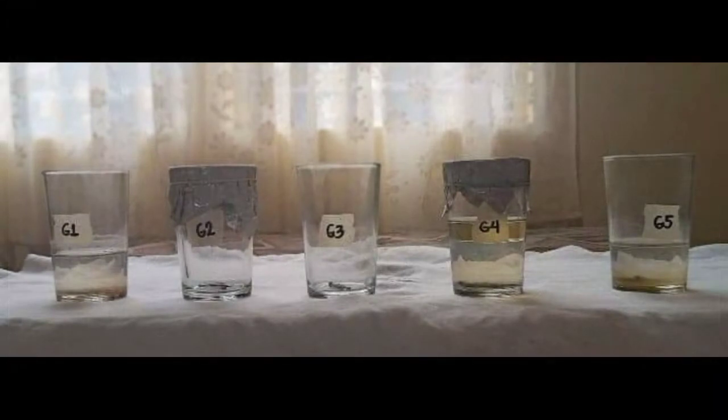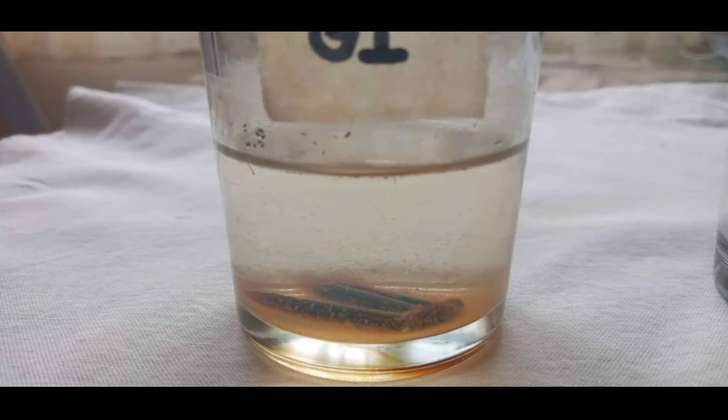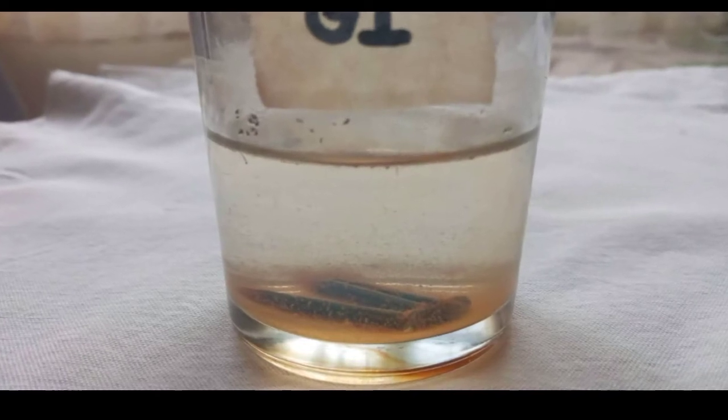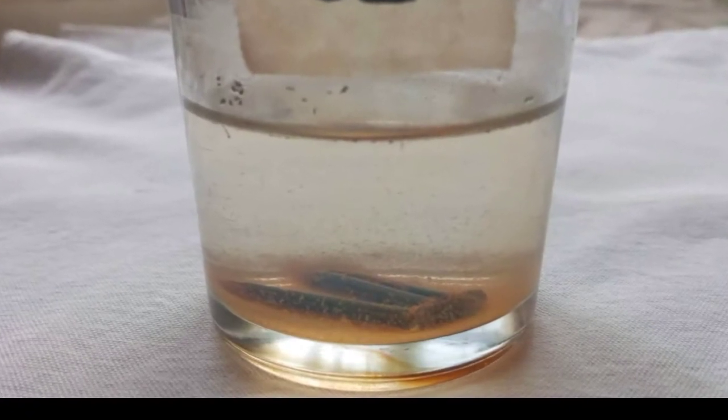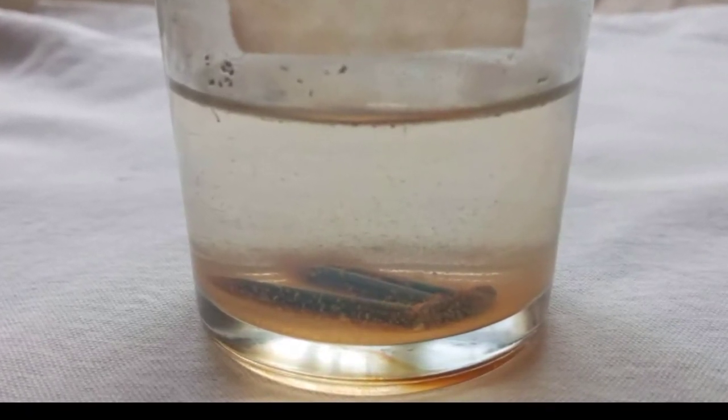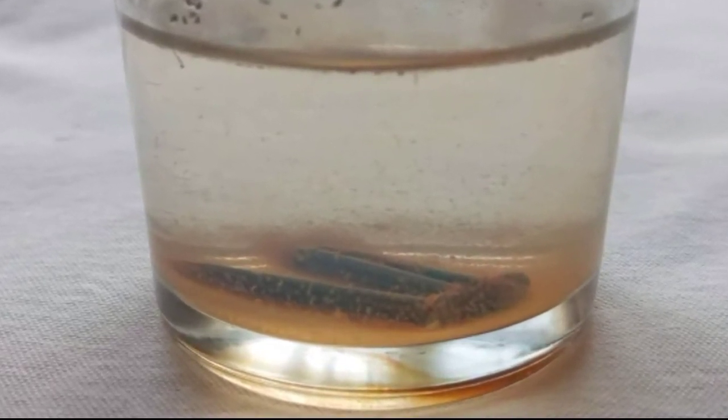After 14 days, Glass 1: Rust is evident in the setup, specifically on the head and tail of the nails. Discoloration of liquid medium is moderate, cloudy with rust color, and there were particle-like which were visible.